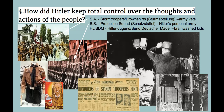Question number four: how did Hitler keep total control over the thoughts and actions of the people? First, he had the SA — also known as the Stormtroopers or Brownshirts — mostly army veterans, similar to Mussolini's Blackshirts. These were thugs, gangsters, veterans, and regular people who supported Nazi ideas. If you said bad things about the Nazi party, the Brownshirts might come beat you up.